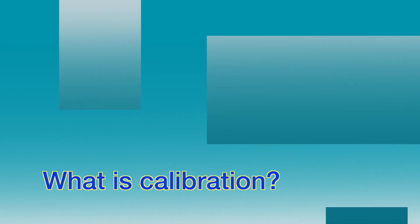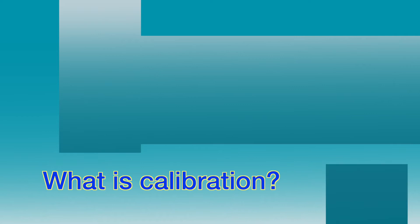So what is this calibration? The software inherently measures everything in pixels. The process of calibration involves basically telling the computer how many microns are within a pixel, and we do that for each of the lenses we're going to use.